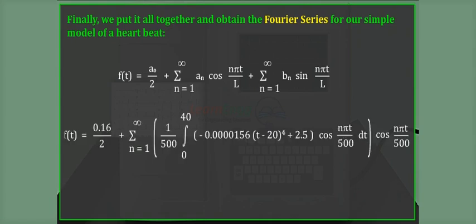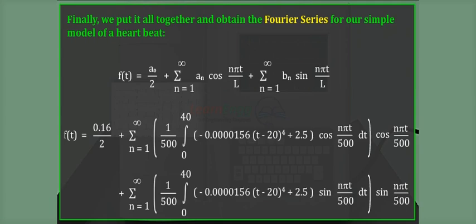f(t) equals 0.16 divided by 2 plus summation of n equals 1 to infinity of 1 divided by 500, integral from 0 to 40 of minus 0.0000156 times (t minus 20) to the power 4 plus 2.5, times cos(nπt divided by 500) dt, times cos(nπt divided by 500), plus summation of n equals 1 to infinity of 1 divided by 500, integral from 0 to 40 of minus 0.0000156 times (t minus 20) to the power 4 plus 2.5, times sin(nπt divided by 500) dt, times sin(nπt divided by 500).